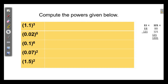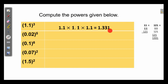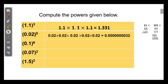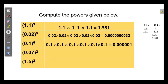Compute the powers given below. 1.1 whole cube — multiply 1.1 by 1.1 three times. 11 squared is 121, and 121 into 11 is 1331. How many decimal places? 1 decimal place into 3 gives 3 decimal places, so the answer is 1.331. Here 2 decimal places, so 2 into 5 gives 10 decimal places; 2 to the power 5 is 32, and you have to put 8 zeros after the decimal point. And 1 power any number is 1, but here it is 0.1 power 6, so 1 into 6 gives 6 decimal places, so the answer is 0.000001.